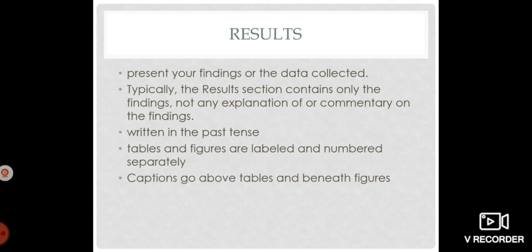Next, we have the results. In this section, you present your findings. Typically, the results section contains only the findings, only the findings, not any explanation or commentary on the findings. Results sections are usually written in the past tense as well. Make sure all tables and figures are labeled and numbered separately. Caption should go above tables and beneath the figures. Again, in the results section, you will write the results of your study, of your experimentation, and how you will be writing that. You will be writing that in tables or in any kind of graphs, as long as it is appropriate in your data that you have collected. Make sure to label. If you are using the table, put your label above the table. If you are using other kinds of graphs, figures, then you write the captions or the label below the figures or the graphs.